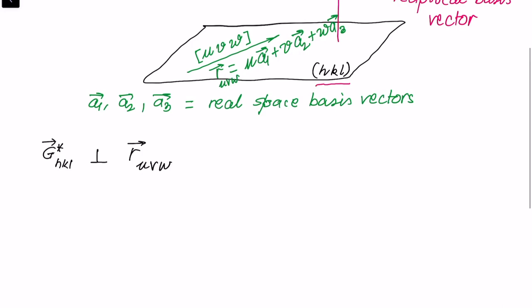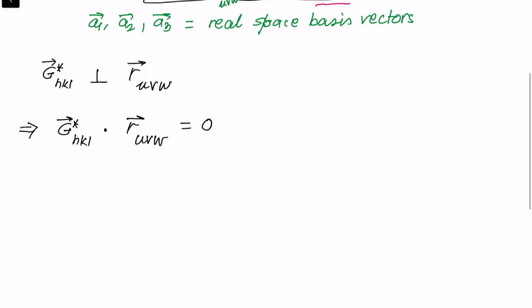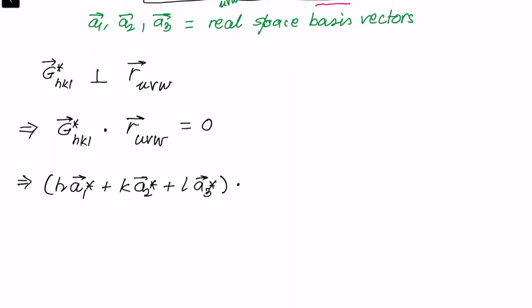The condition for perpendicularity can be expressed as a dot product. So I write that G-star HKL dot R-UVW equals zero. Since the dot product is zero, we can now write these vectors in terms of their definitions: G-star HKL is H·A1-star plus K·A2-star plus L·A3-star, dot R-UVW which is U·A1 plus V·A2 plus W·A3, and this dot product equals zero because these two vectors are perpendicular.